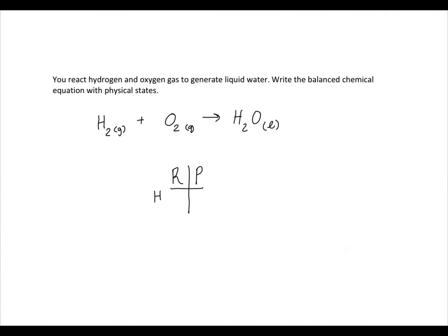We have hydrogen and oxygen. On our reactant side we have two atoms of oxygen, but on our product side we only have one. So we must multiply water by two to have two atoms of oxygen on both sides. Now hydrogen has four atoms on the product side but only two in the reactants, so we must multiply hydrogen by two to have four in the reactants and in the products.